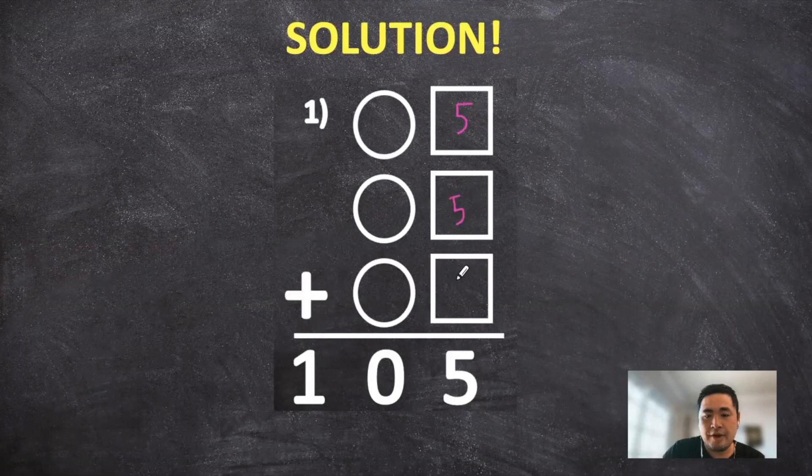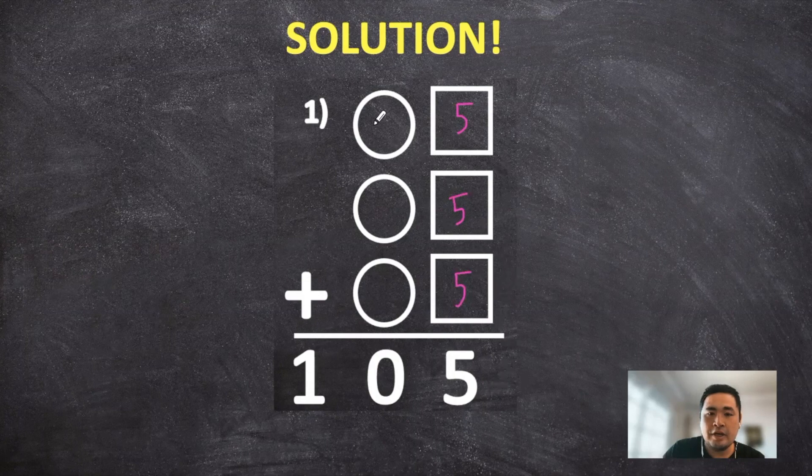So if we put the five down here, that would equal 15 here. If we have a one on the top, we can subtract 10 minus 1, and that would equal 9.